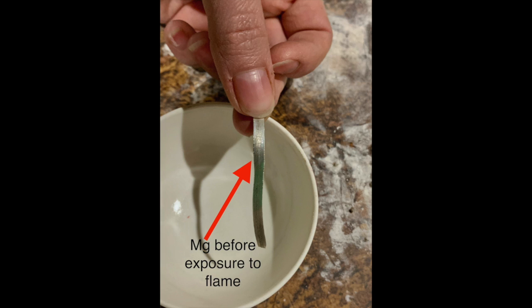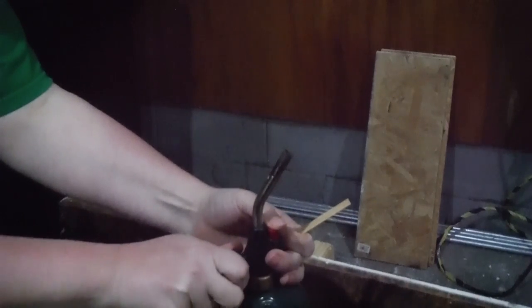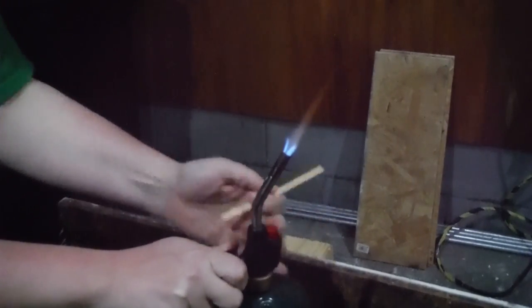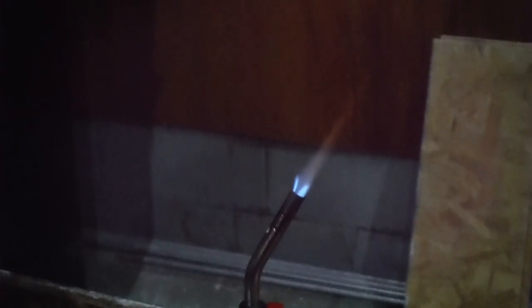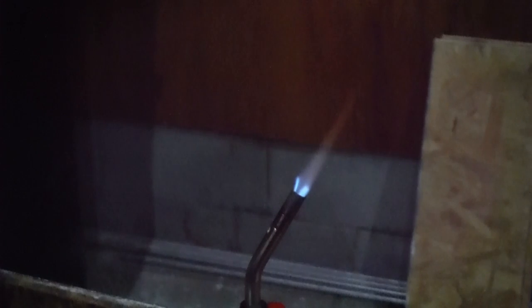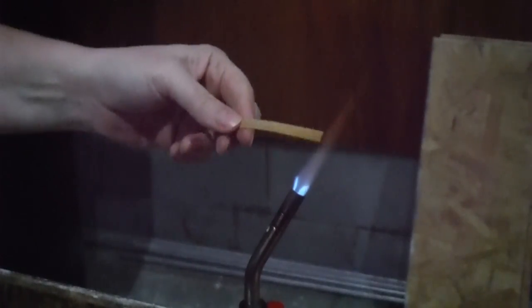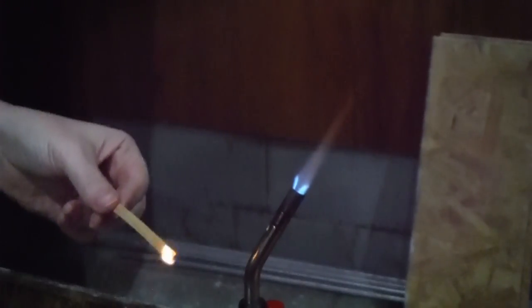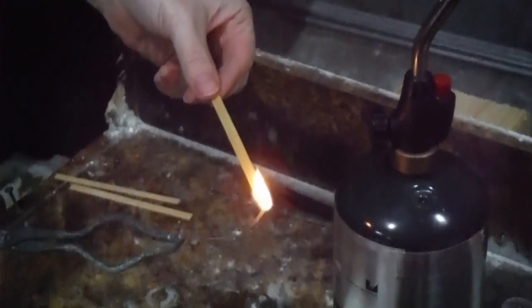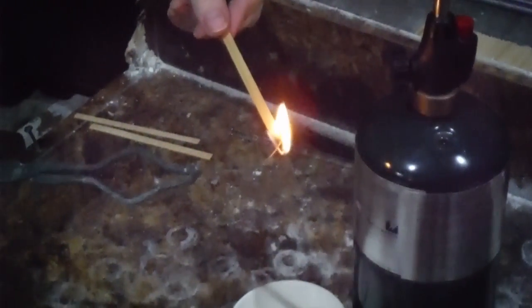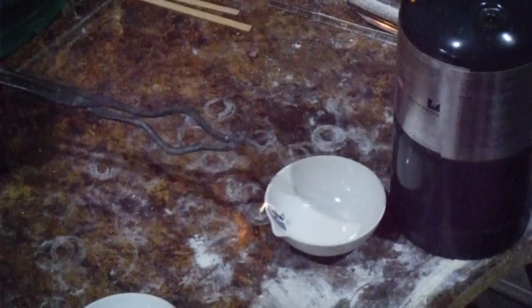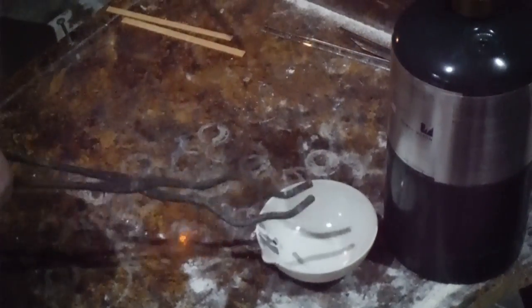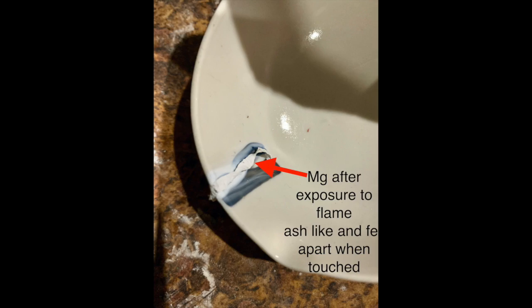So here's what magnesium looks like before you expose it to the flame. By the way, you can rewind, stop these videos whenever you need to. Here, what you see, I've ignited my very fancy Bunsen burner. It's actually a propane torch. And what you're going to see me do is ignite that magnesium strip. This is not something that normally you can watch as far as the reaction goes, because it burns so bright. It can actually damage your eyes. And what you're going to see in the next picture is the results from that experiment, what the material looks like after.